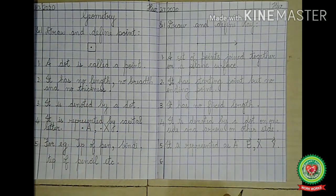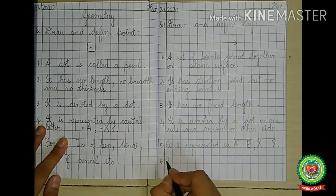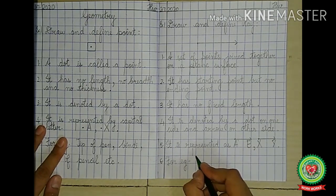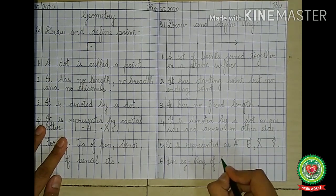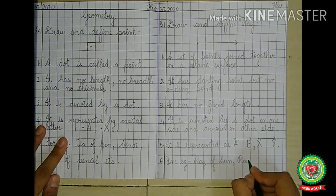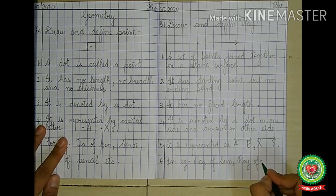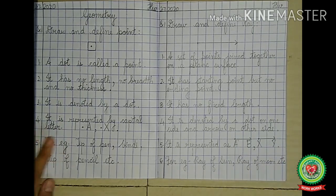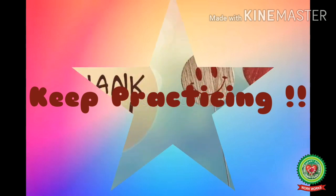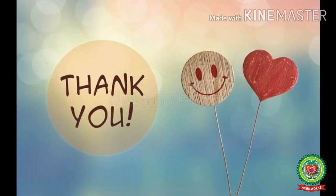Leave a line, put number 6. For example: ray of sun, ray of moon, etc. Okay children, this was the copy approach of ray. I hope you are clear with the topic. Now keep practicing the sums given in your snap homework. Thank you, class. Stay safe. Stay happy.